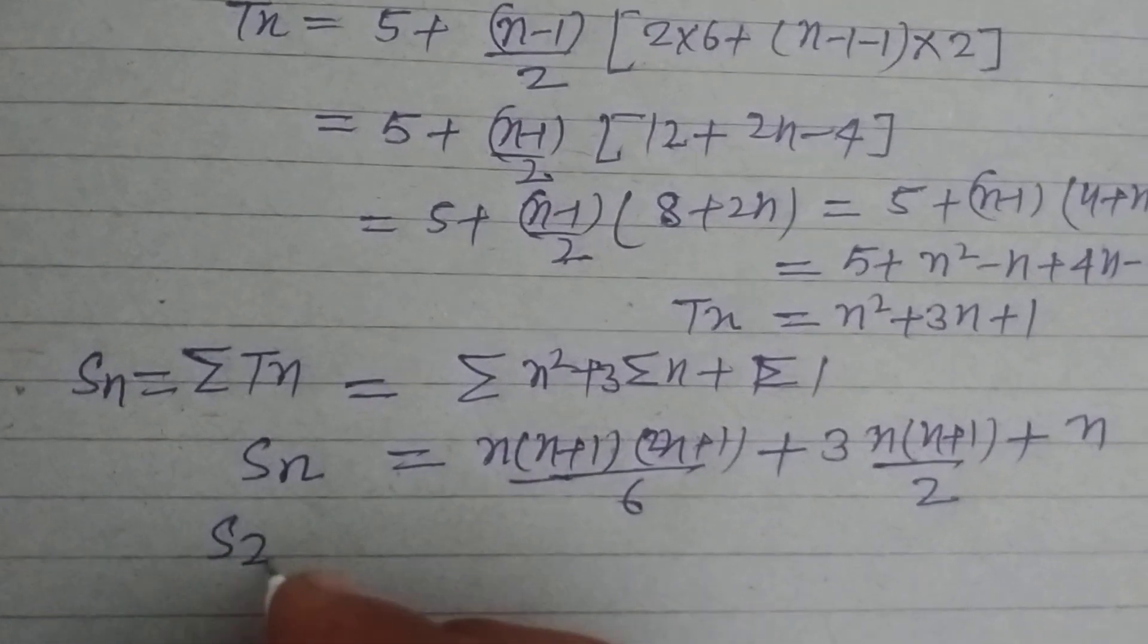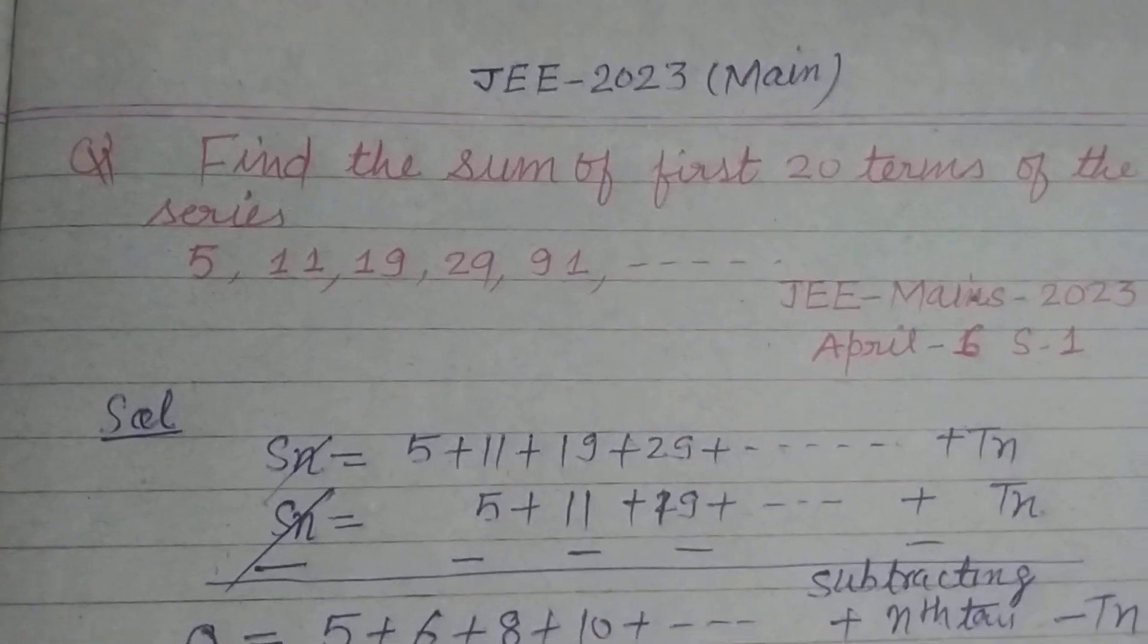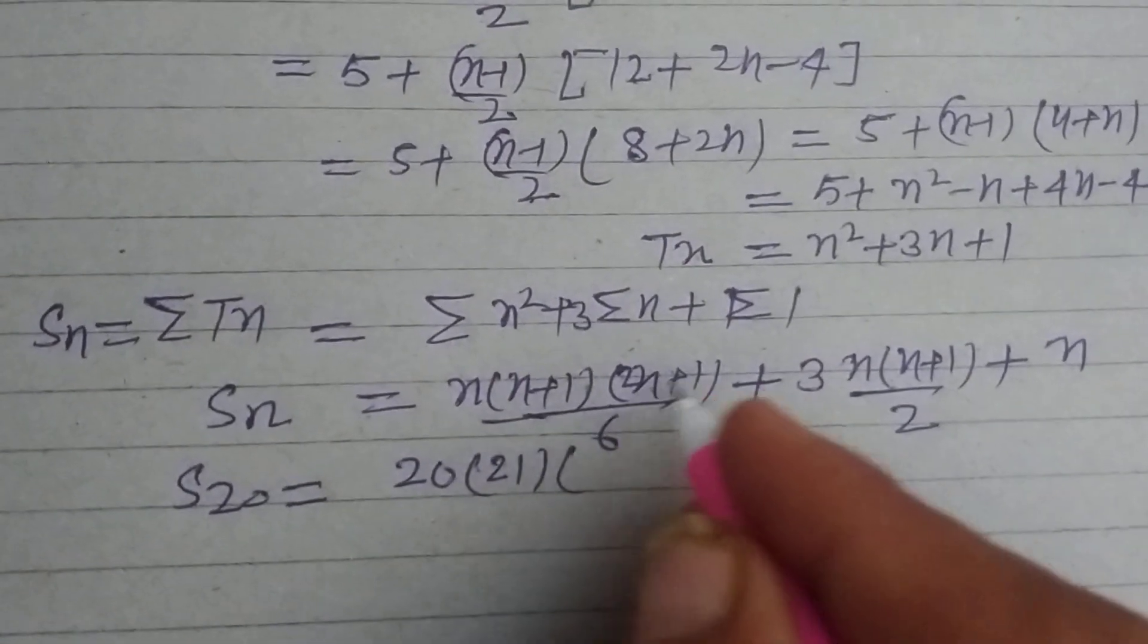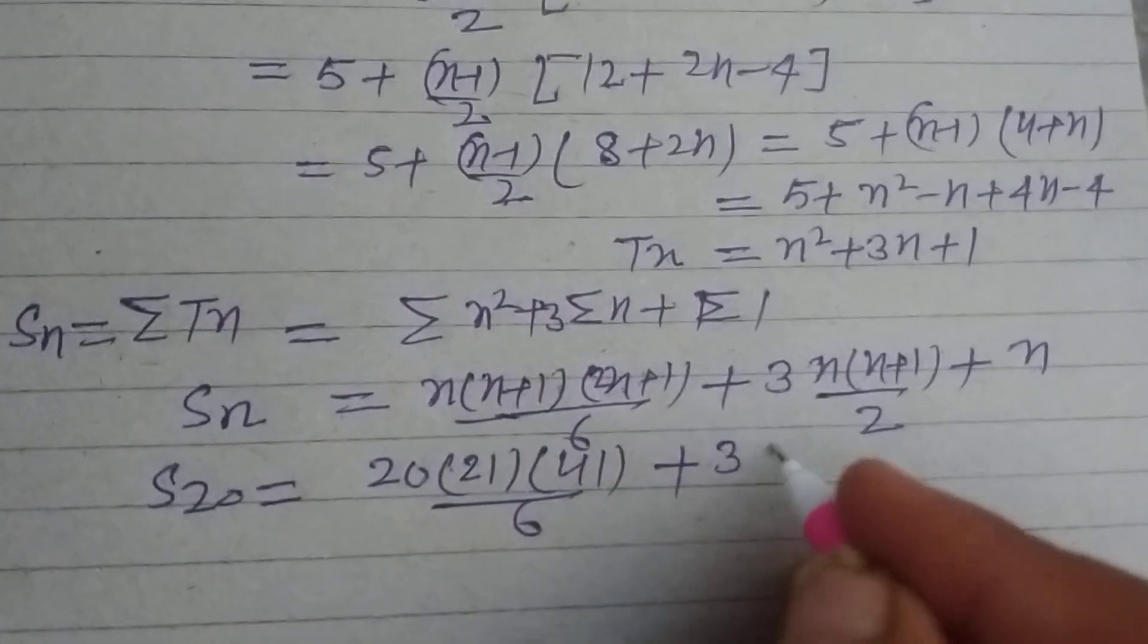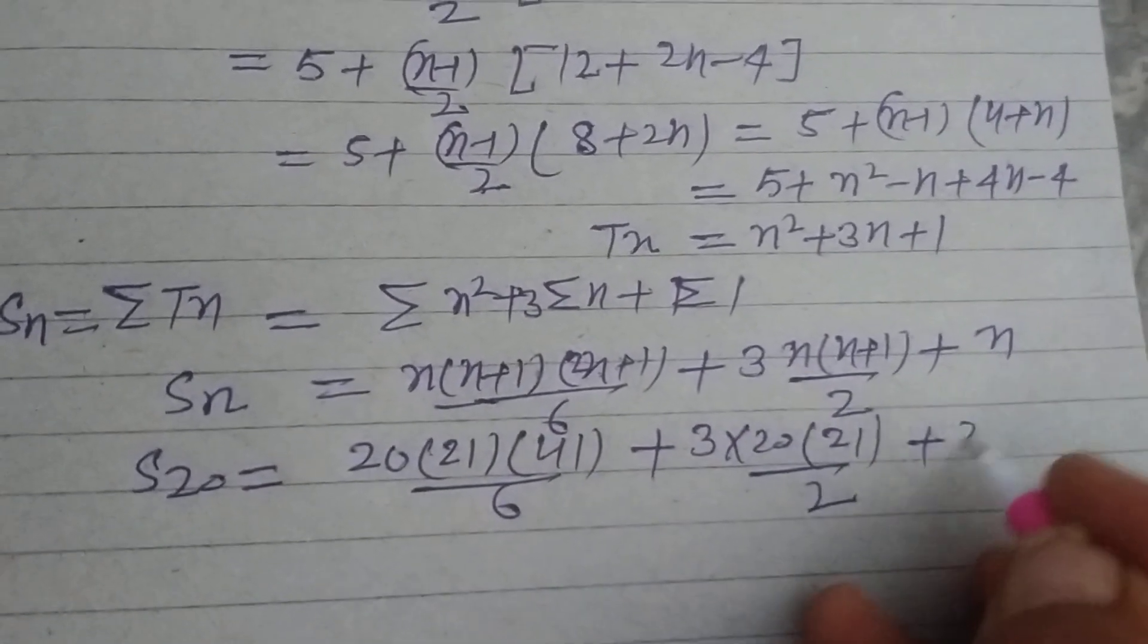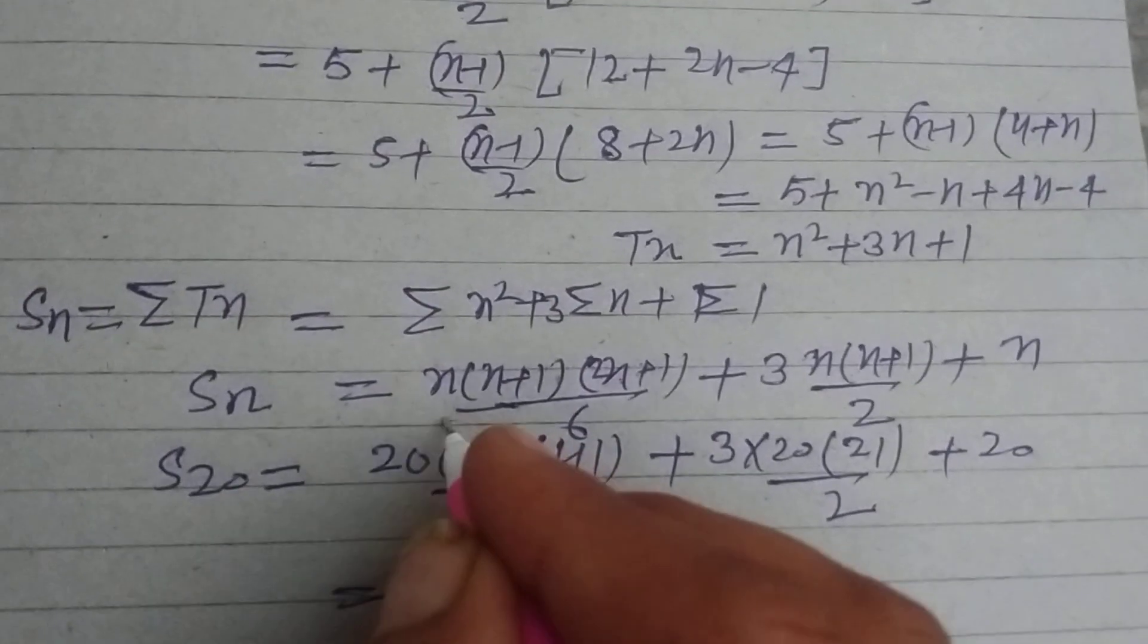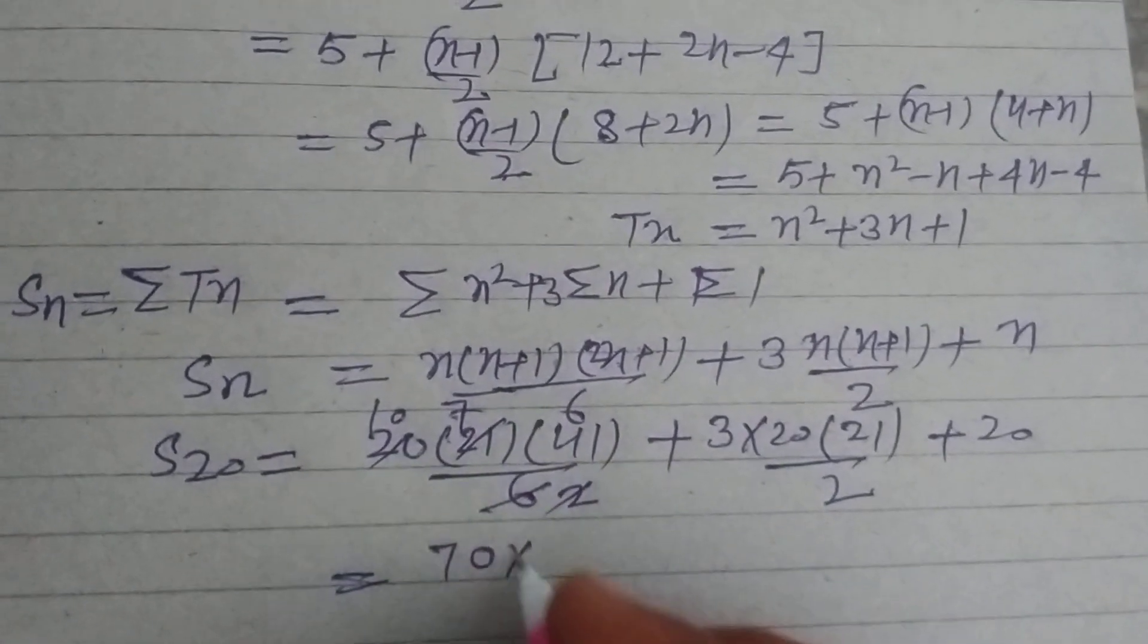So students, this is the sum of these N terms. So we put N equal to 20 here, S20, because the question is asking the sum of first 20 terms. So we put here N equal to 20, this is 21, this is 22, 40, 41 by 6, plus 3 into 20 into 21 by 2 plus 20.